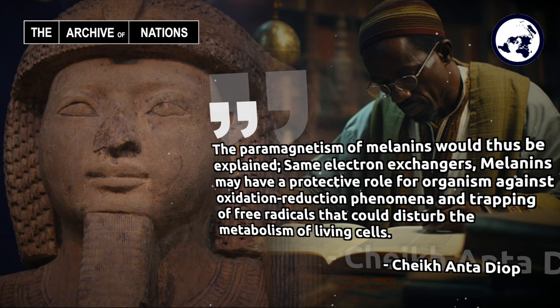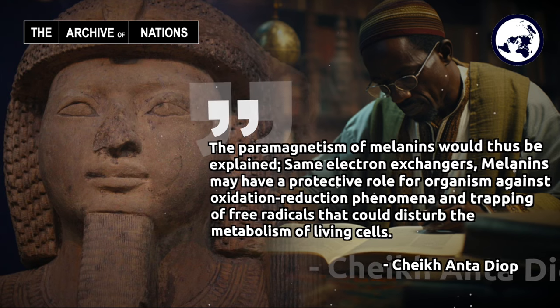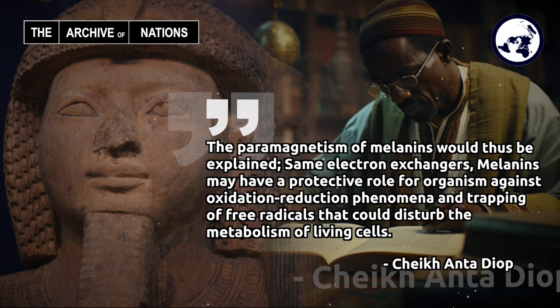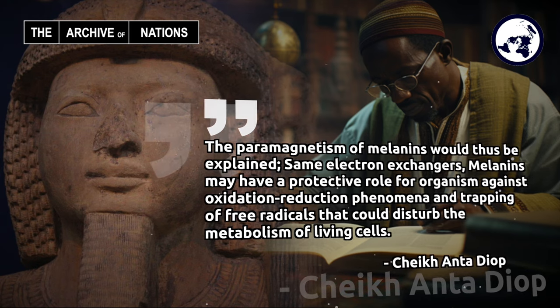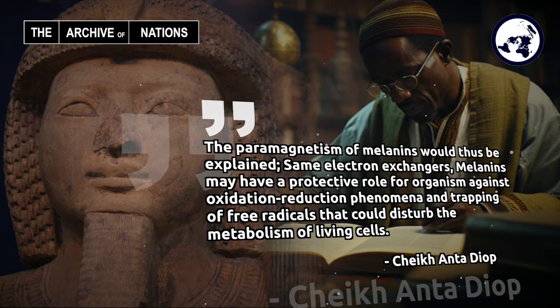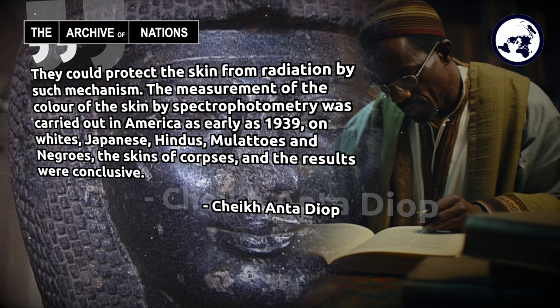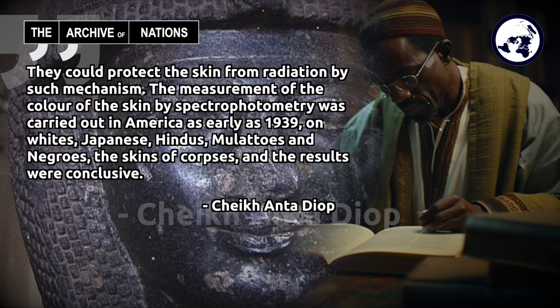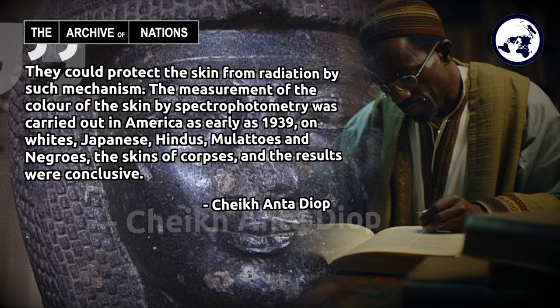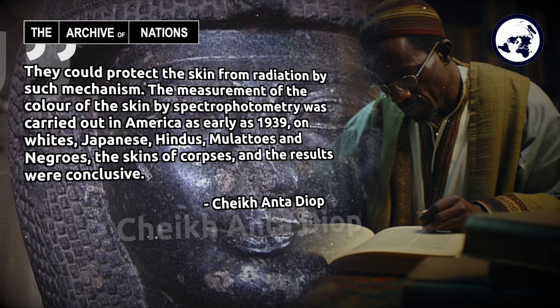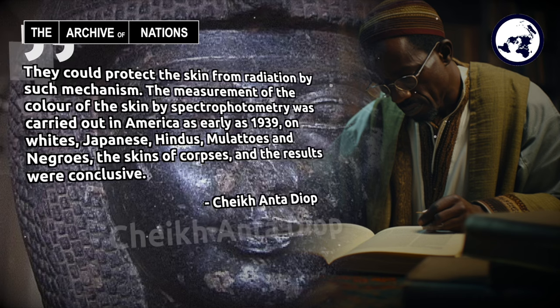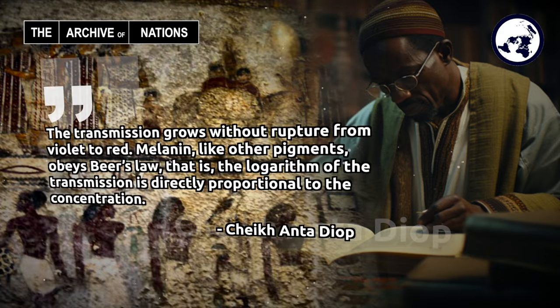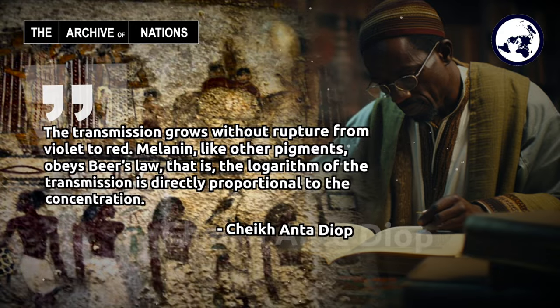The paramagnetism of melanins would thus be explained: as electron exchangers, melanins may have a protective role for the organism against oxidation-reduction phenomena and the trapping of free radicals that could disturb the metabolism of living cells. They could protect the skin from radiation by such a mechanism. The measurement of the color of the skin by spectrophotometry was carried out in America as early as 1939, on whites, Japanese, Hindus, mulattoes, and Negroes. The results were conclusive: transmission grows without rupture from violet to red. Melanin, like other pigments, obeys Beer's Law — that is, the logarithm of the transmission is directly proportional to the concentration.